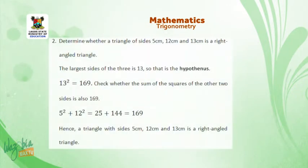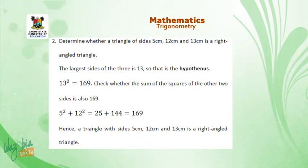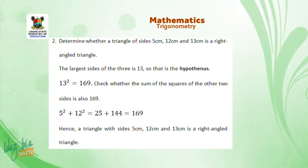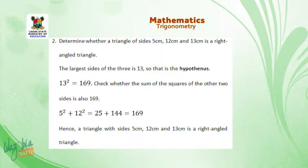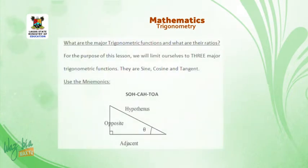Another question: determine whether a triangle of sides 5, 12, and 13 centimeters is a right angle triangle. The largest side is 13; 13 squared is 169. Then 12 squared is 144 and 5 squared is 25; adding them gives 169. So a triangle of sides 5, 12, and 13 is also a right angle triangle. Now, what are the major trigonometric functions and their ratios?